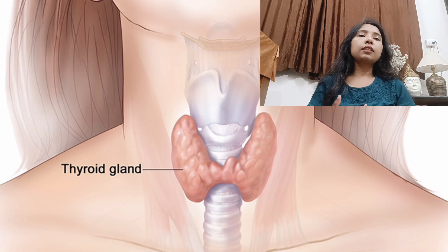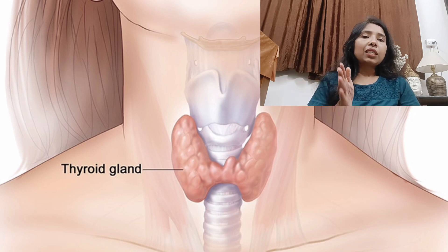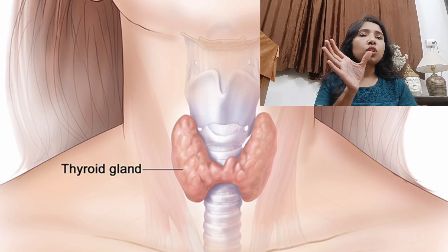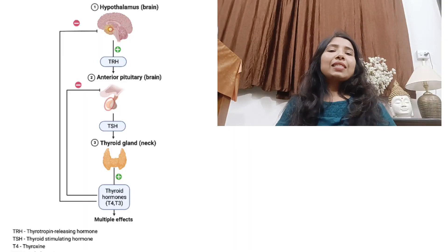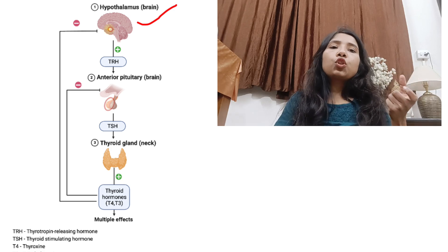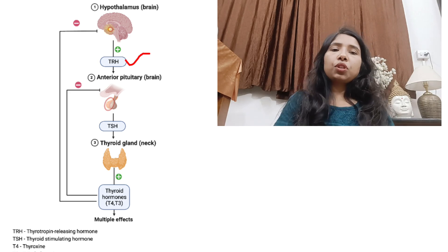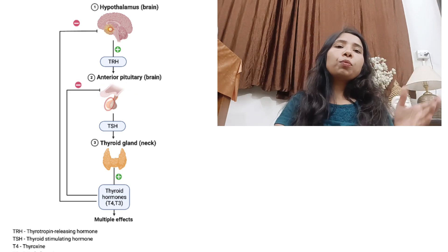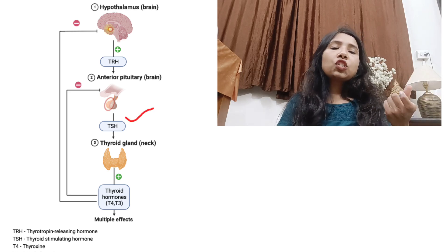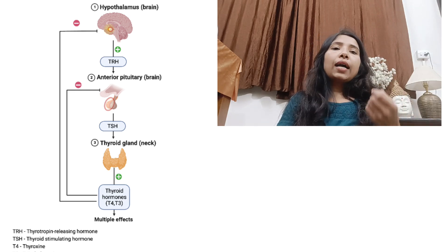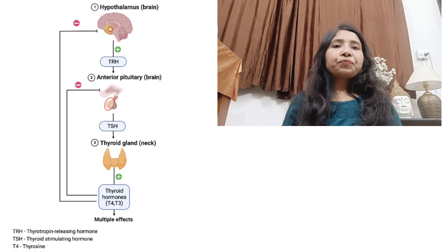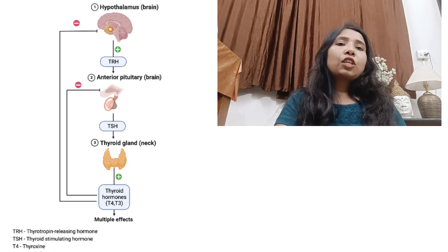When a thyroid test is prescribed, you will see T3, T4, and TSH listed. Here is how the hormonal cascade works: the hypothalamus releases TRH (Thyroid Releasing Hormone), which stimulates the anterior pituitary gland to secrete TSH (Thyroid Stimulating Hormone). TSH then stimulates the thyroid gland to release T3 (Triiodothyronine) and T4 (Thyroxine).